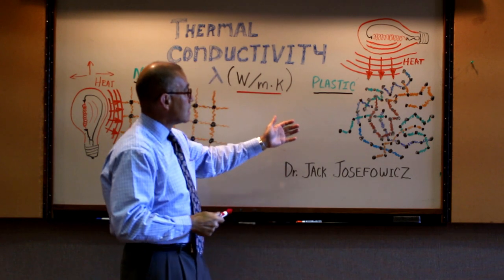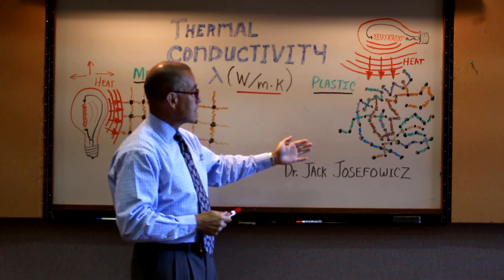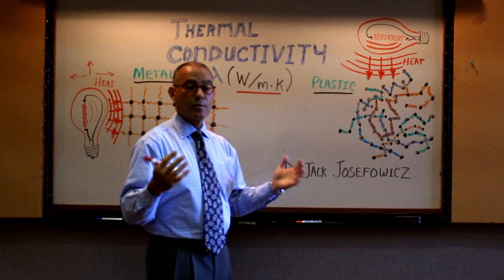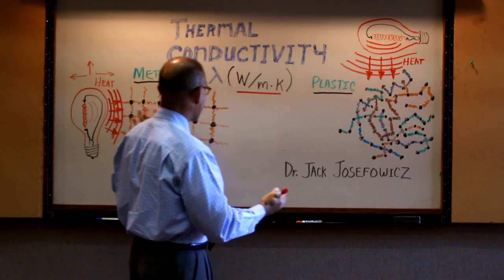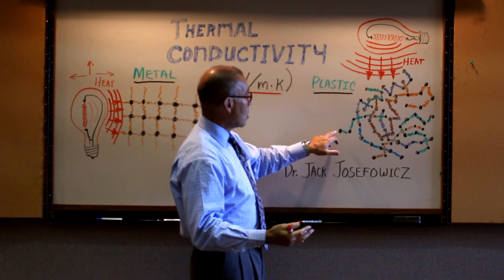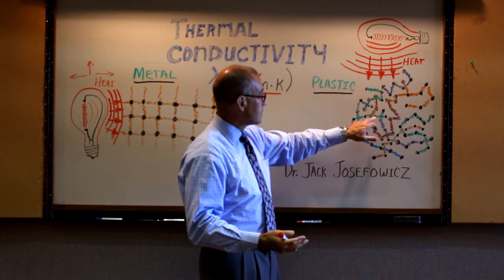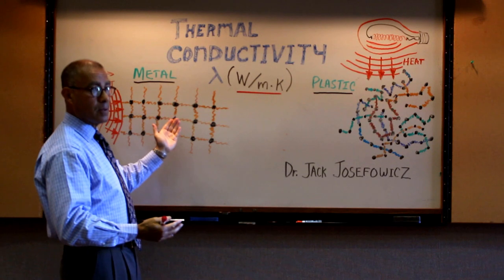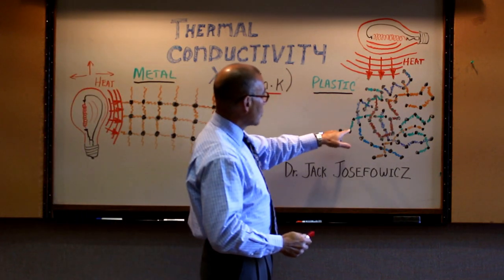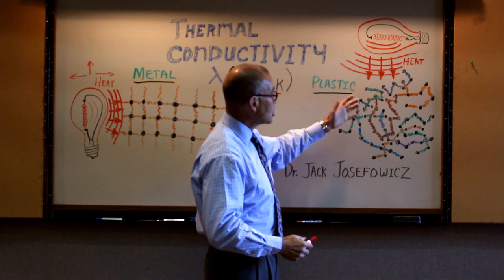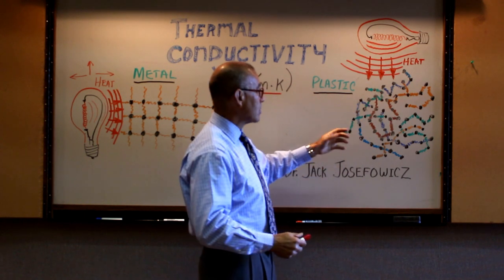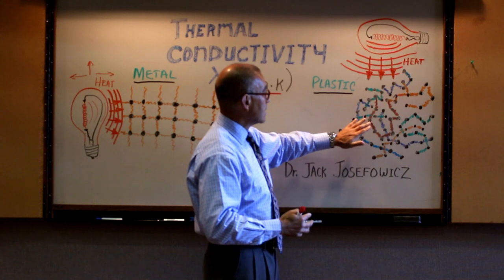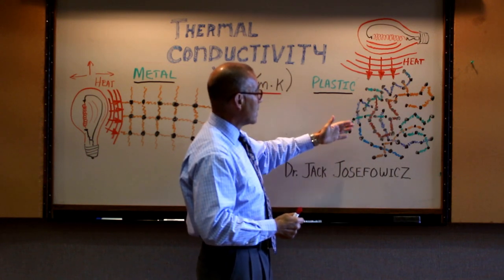By contrast, when you look at a plastic, plastics are organized typically as what's referred to as amorphous materials or non-crystalline materials, where there is no organized structure, but where you have long chains of molecules, which have atoms that are coupled also together, like in the case of the metals, but where the molecules are independent of each other, much more independent of each other. They behave more as units or single entities different from each other in terms of their coupling.